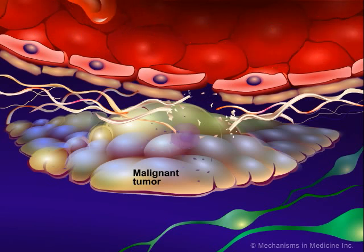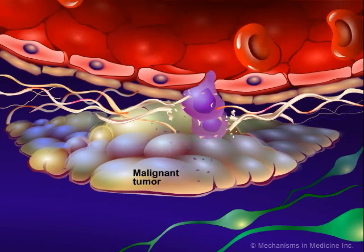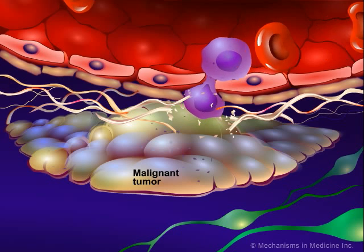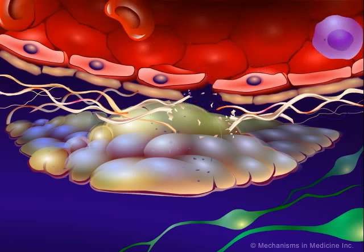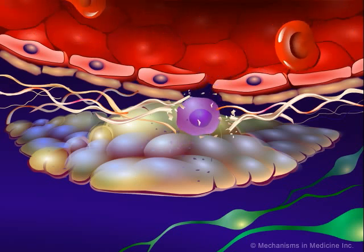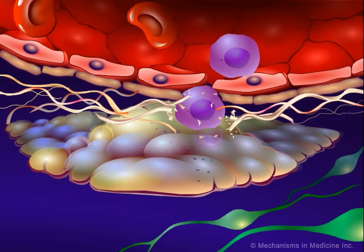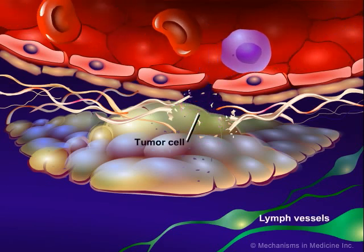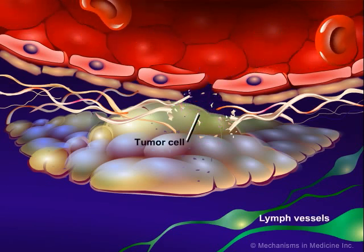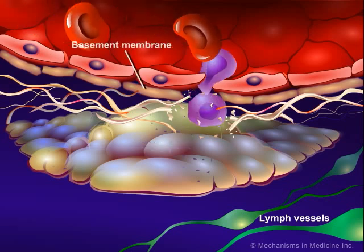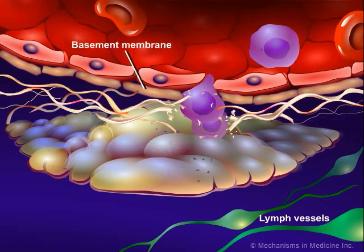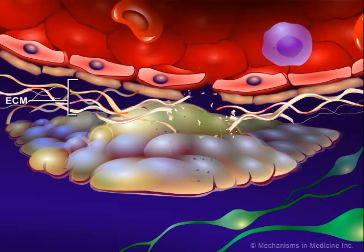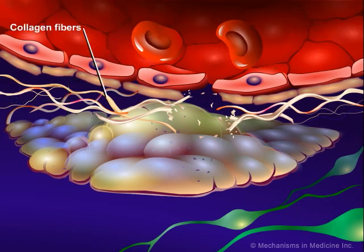Their ability to invade eventually affects the function of the normal tissue into which they are growing. Metastasis is a multifactorial process involving complex interactions between tumor cells, vessels of the lymph and vascular systems, the basement membrane surrounding those vessels, and the extracellular matrix, which consists mainly of collagen.